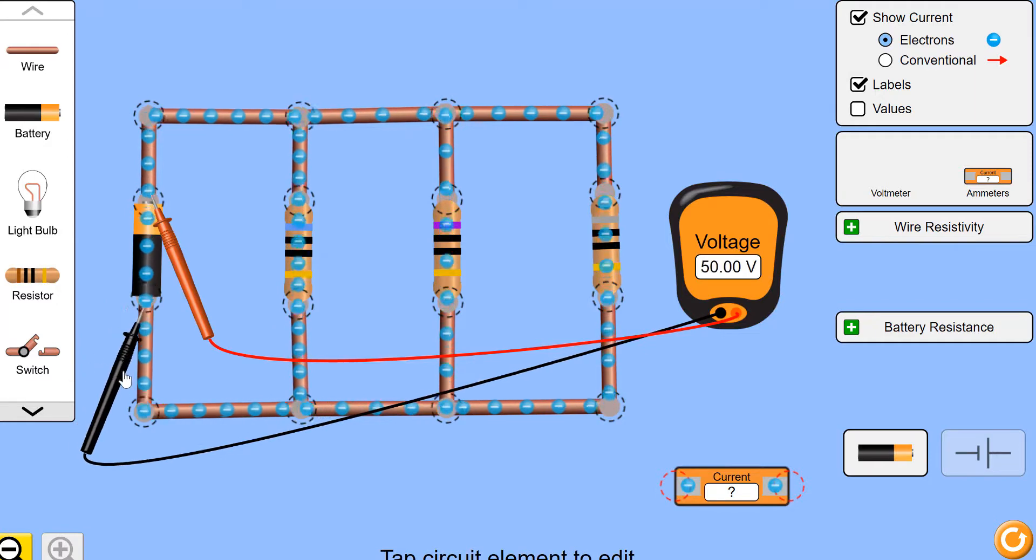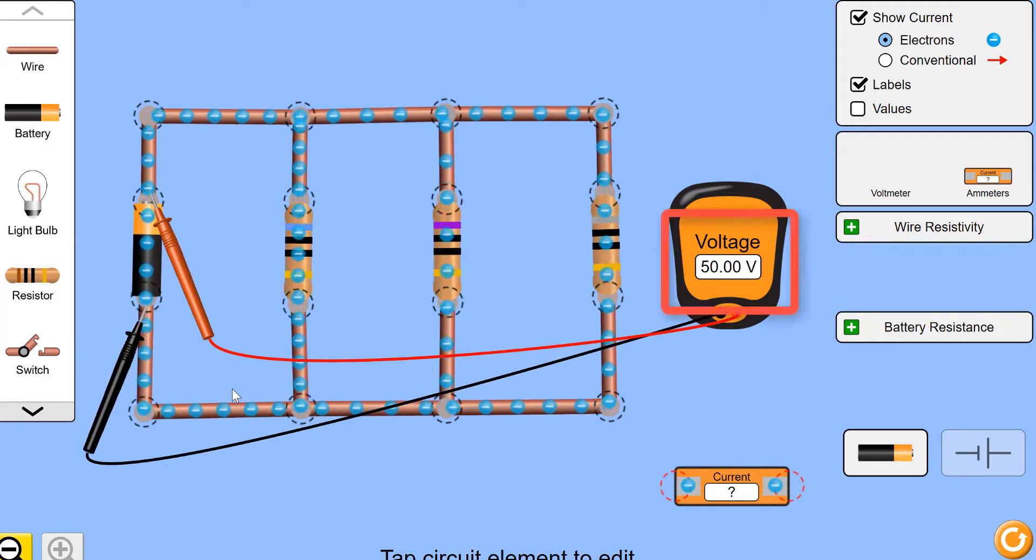So I'm going to first check my battery. My battery has a potential difference of 50 volts. The top of my battery is 50 volts higher than the bottom.